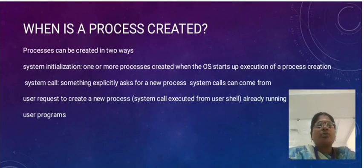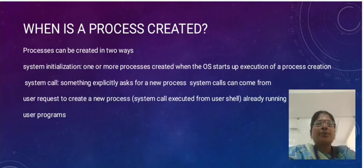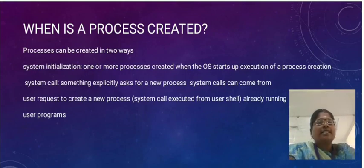One or more processes are created when the OS starts up — that is system initialization. For system calls, something explicitly asks for a new process. System calls can come from a user request to create a new process, for example calling fork(), which is a system call executed from the user program already running.